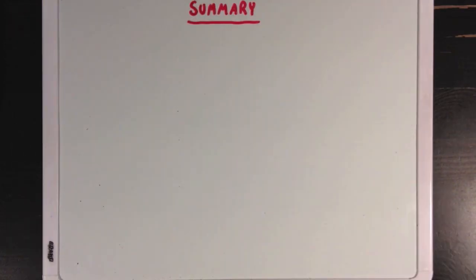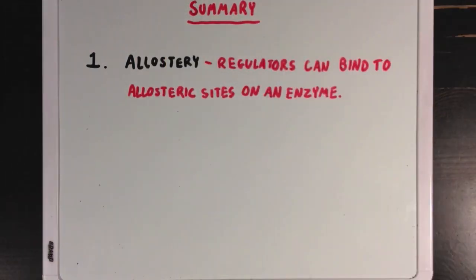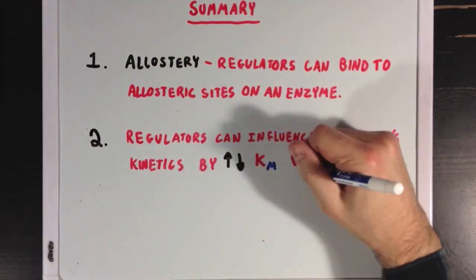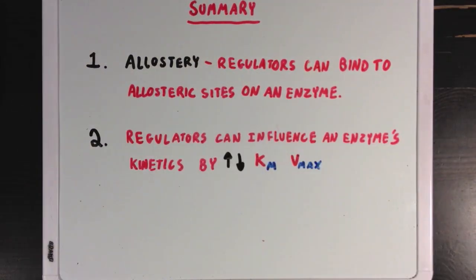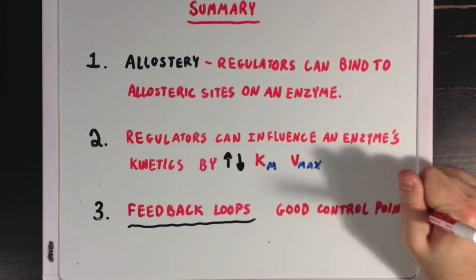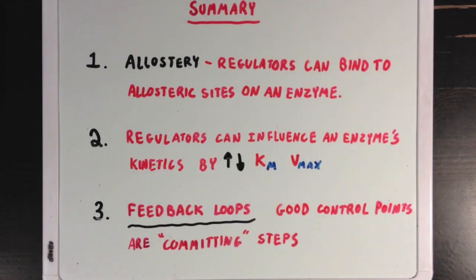So, what did we learn? Well, first we learned about the concept of allostery, and how regulatory molecules can bind to allosteric sites instead of active sites. Second, we learned that these allosteric regulators influence an enzyme's kinetics by increasing or decreasing Km or Vmax. And third, we learned about what a feedback loop is, and how in long, multi-step processes like glycolysis, the best control points are highly committing steps, the ones with very negative delta G values.